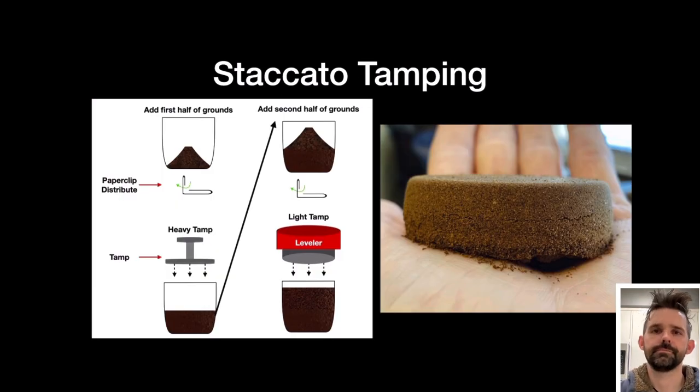So what else can we learn from staccato? We can look at staccato tamping. So part of what my understanding of staccato was, is that you had a compacted layer on the bottom. And this compacted layer was doing something to the rest of the puck. So what if we dose part of the coffee to distribute and then tamp pretty hard and then dose the rest and then tamp again. I found this technique to be useful and it improved extraction yield and taste. And it was able to get me halfway there to sifted staccato without the extra work.